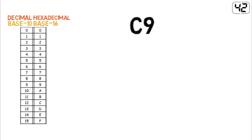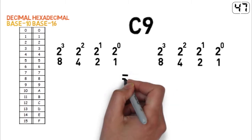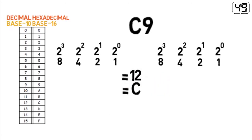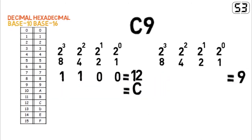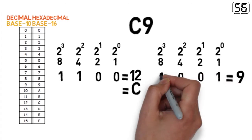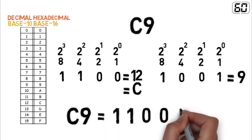To convert hexadecimal to binary, we reverse the process. Start by converting each hex digit into 4 bits. C which is 12 becomes 1 1 0 0, and 9 becomes 1 0 0 1. So c9 equals 1 1 0 0 1 0 0 1.